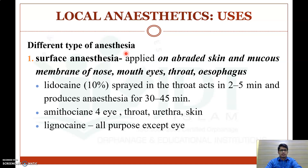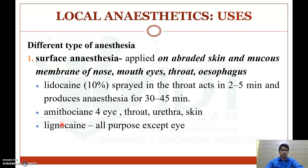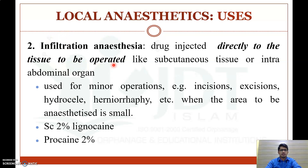Uses of local anesthetics — first use is surface anesthesia, where local anesthetics are applied on abraded skin or mucous membranes of the nose, mouth, eye, throat, and esophagus. Examples: lidocaine sprayed in the throat acts in two to five minutes producing anesthesia for 30–45 minutes; amethocaine used in the eye, throat, urethra, and skin; and lignocaine usable in all parts except the eye.